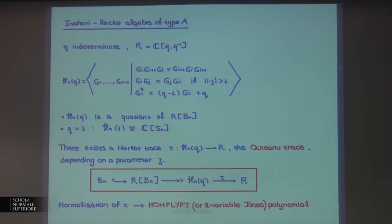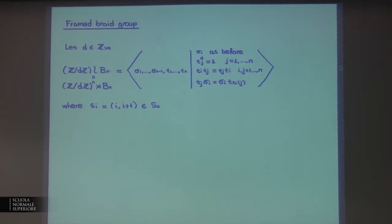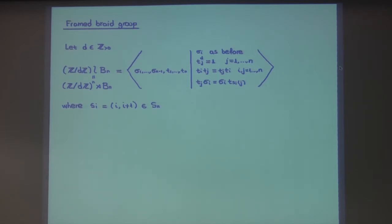Now I'm going to talk about framed knots and links, and for this I introduce the framed braid group, which is simply the wreath product of a cyclic group of order d with the braid group. By wreath product I mean the semi-direct product of n copies of the cyclic group with BN, where the semi-direct product structure is: generators sigma_1 to sigma_{N-1} of the braid group; generators T_1 to T_N each generating a cyclic group, commuting with each other; and whenever T_j is multiplied with sigma_i, it passes through with a change of index by applying the permutation (i, i+1).